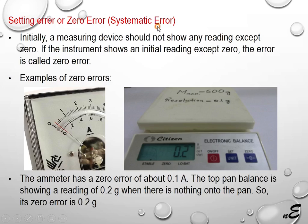Setting error or zero error. Here there is an analog ammeter. Its initial current should be zero, but we see that it is showing about 0.1 ampere — 0 to 1 ampere divided by 10 equals 0.1 ampere. This pointer shows a reading of 0.1 ampere, so it shows some systematic error.